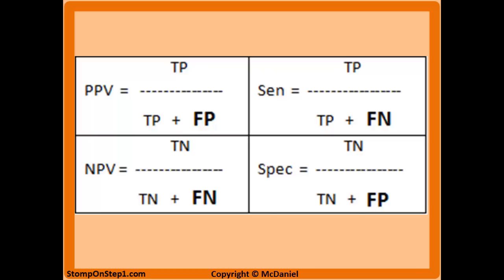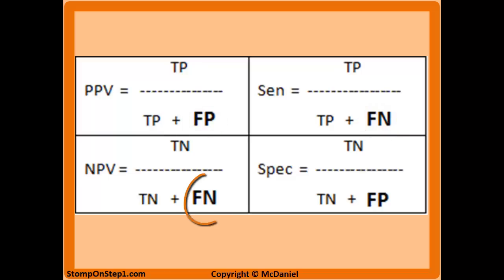For sensitivity, I think of it as looking like positive predictive value in the formula, but you're just swapping out that bottom right value. Positive predictive value is just one little tweak away from sensitivity, and from negative predictive value it's one little tweak to get to specificity.